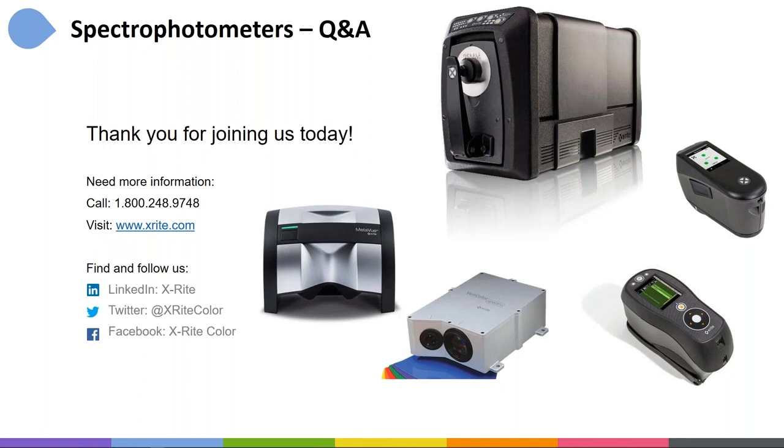Do the benchtops have D8 and 45-0 capabilities? No, they do not. The benchtop devices are all D8, all sphere instruments. One of the advantages of 45-0 devices is that because it's a directional light source, it is easier to do smaller spots. We have handheld 45-0 devices. The handheld instruments get used in the printing world a lot, because printers have to measure very small spots and 45-0 instruments do that really well.